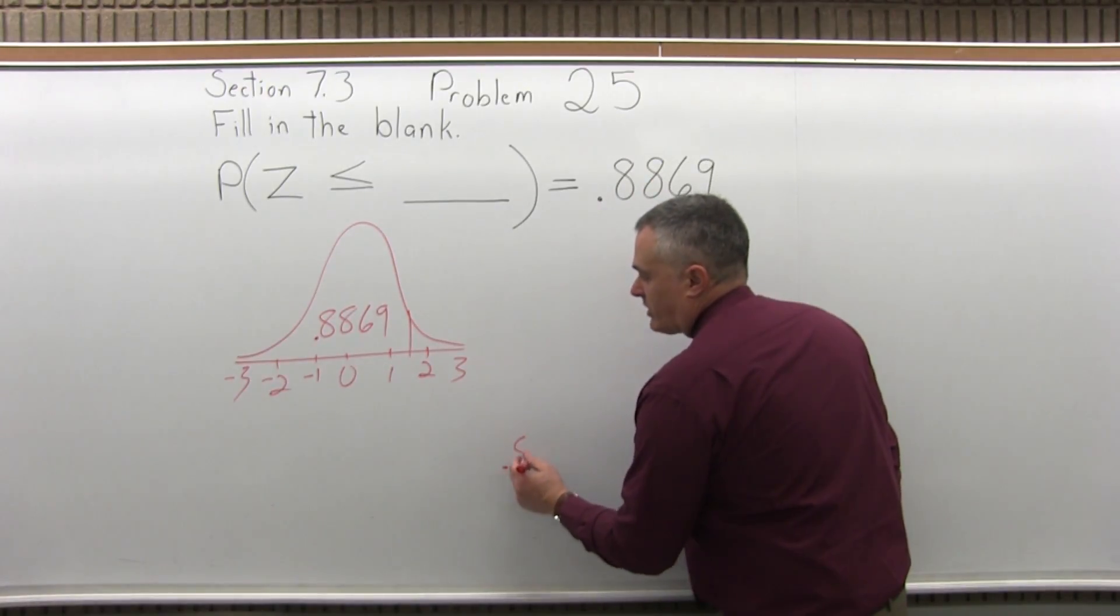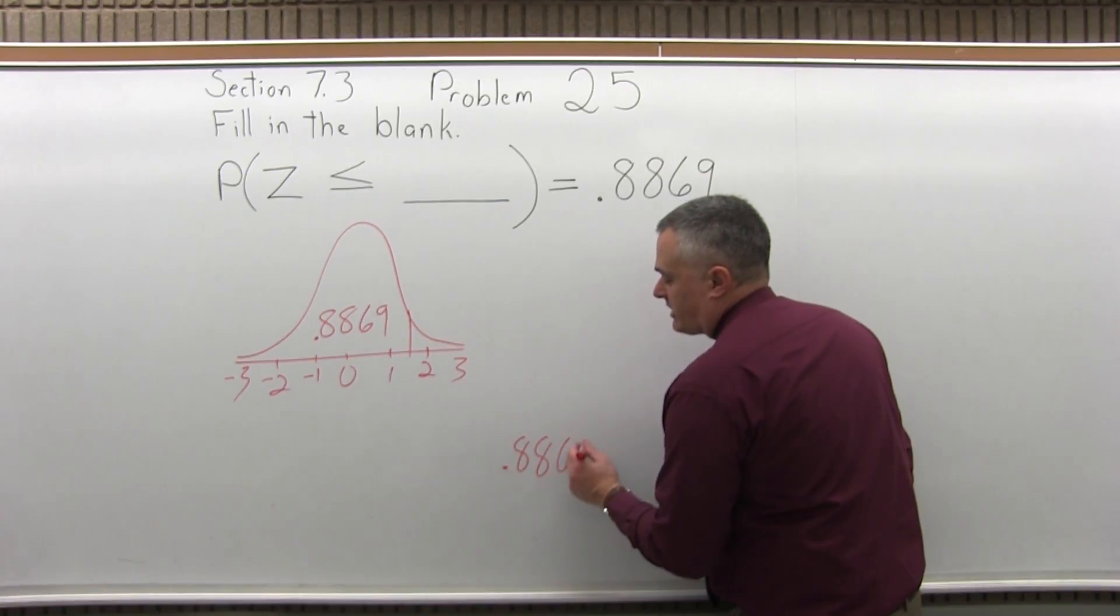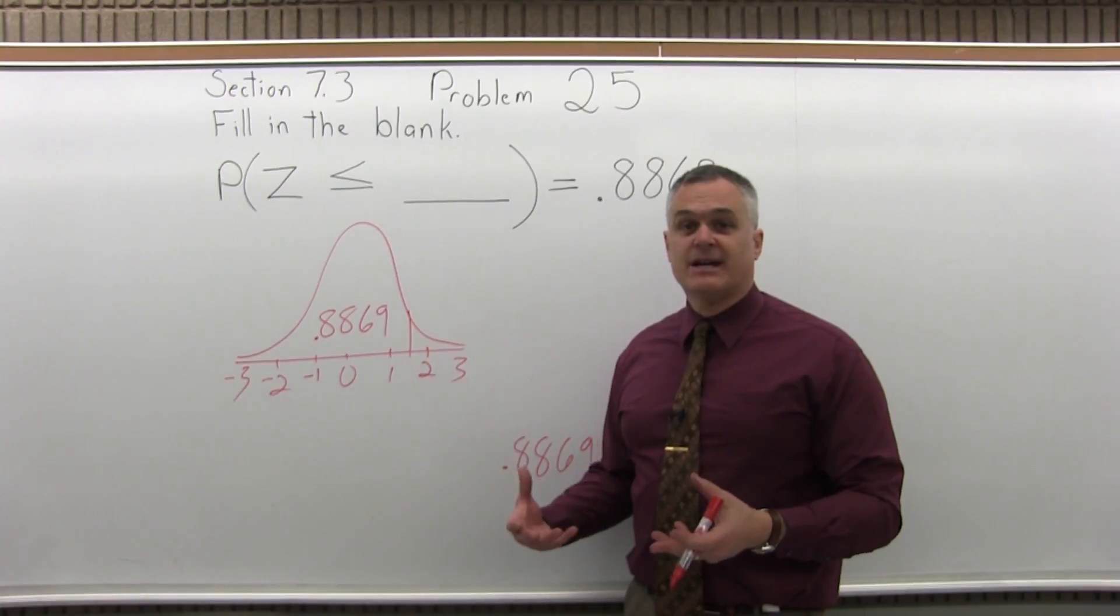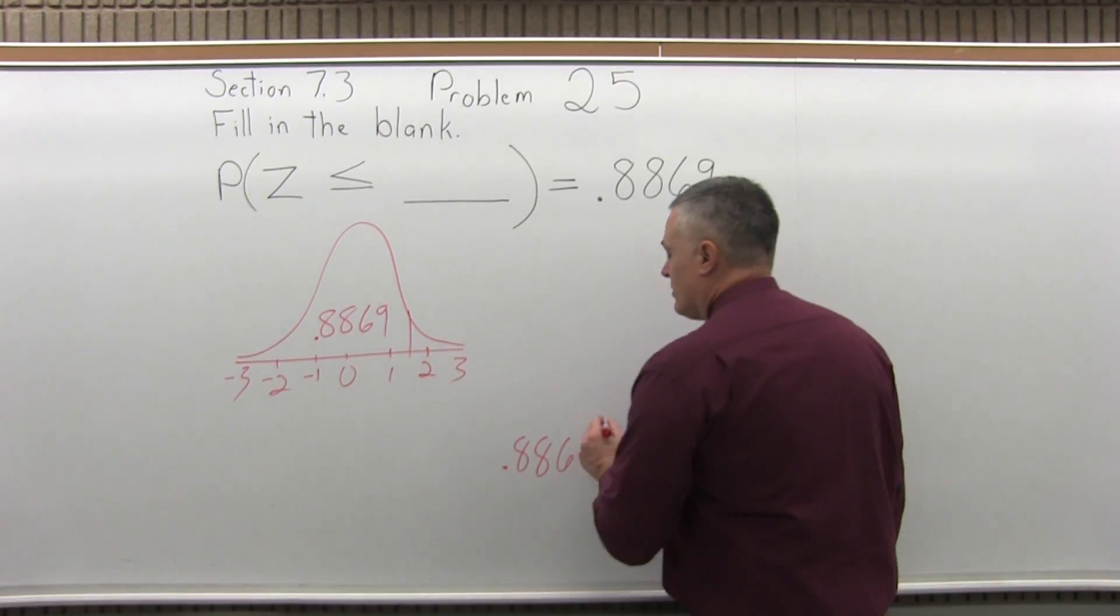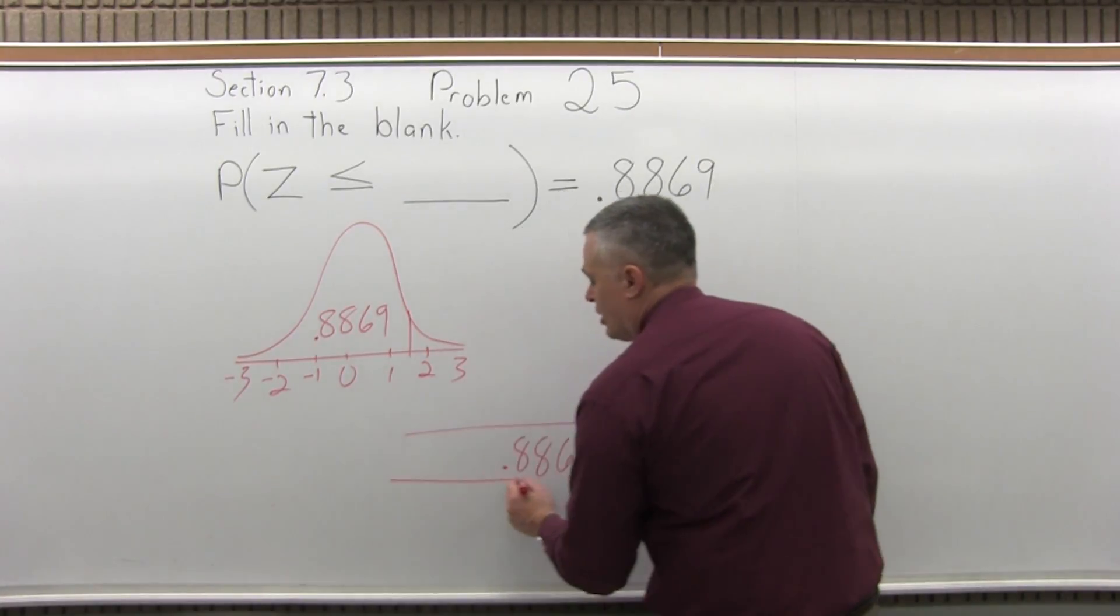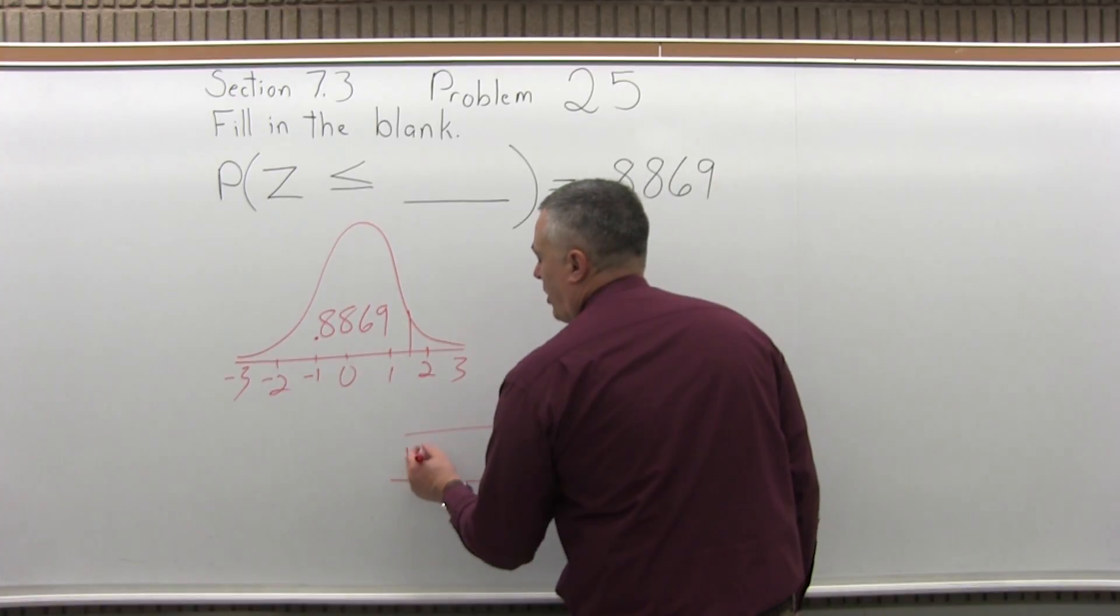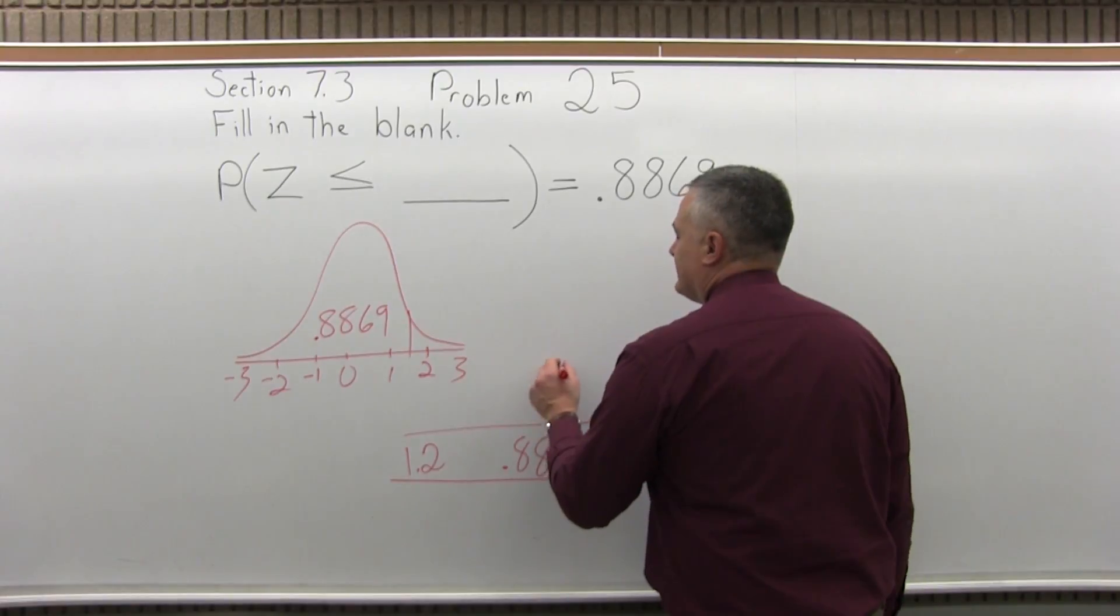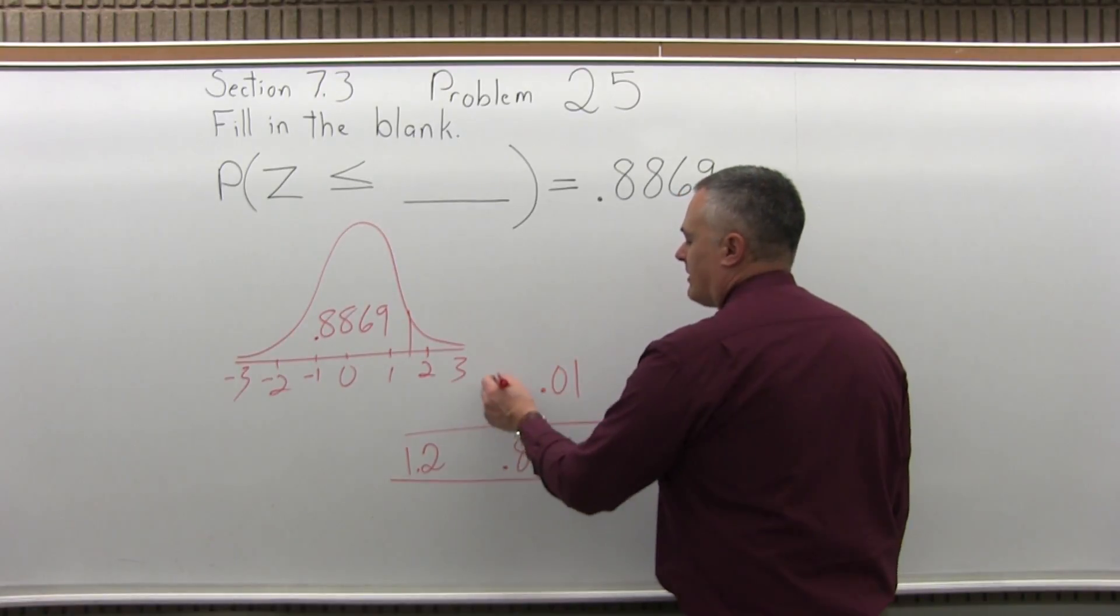And the chart goes in order. So wherever you start, you can keep looking until the numbers get a little bigger or a little smaller until you get to the .8869 in the center. And when you do, you'll find that it is in the positive 1.2 row and it is in the .01 column.